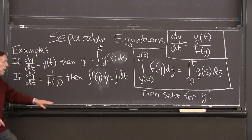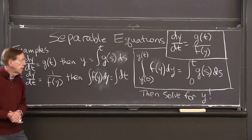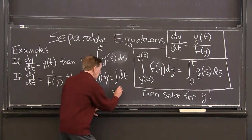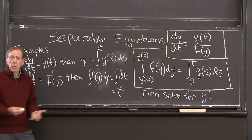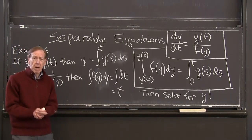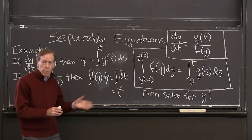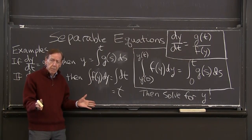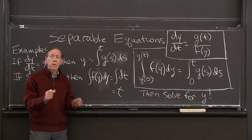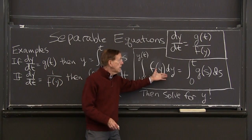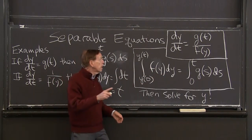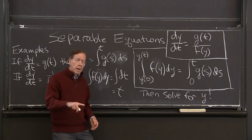Suppose there was no t, just a 1 over f of y, with g of t equal 1. Then I bring the f of y up. I integrate the f, dy. And moving the dt there, I'm just integrating dt. So the right-hand side would just be t. And the left-hand side is an integral we have to do. That's the minimum amount of work to solve a differential equation.